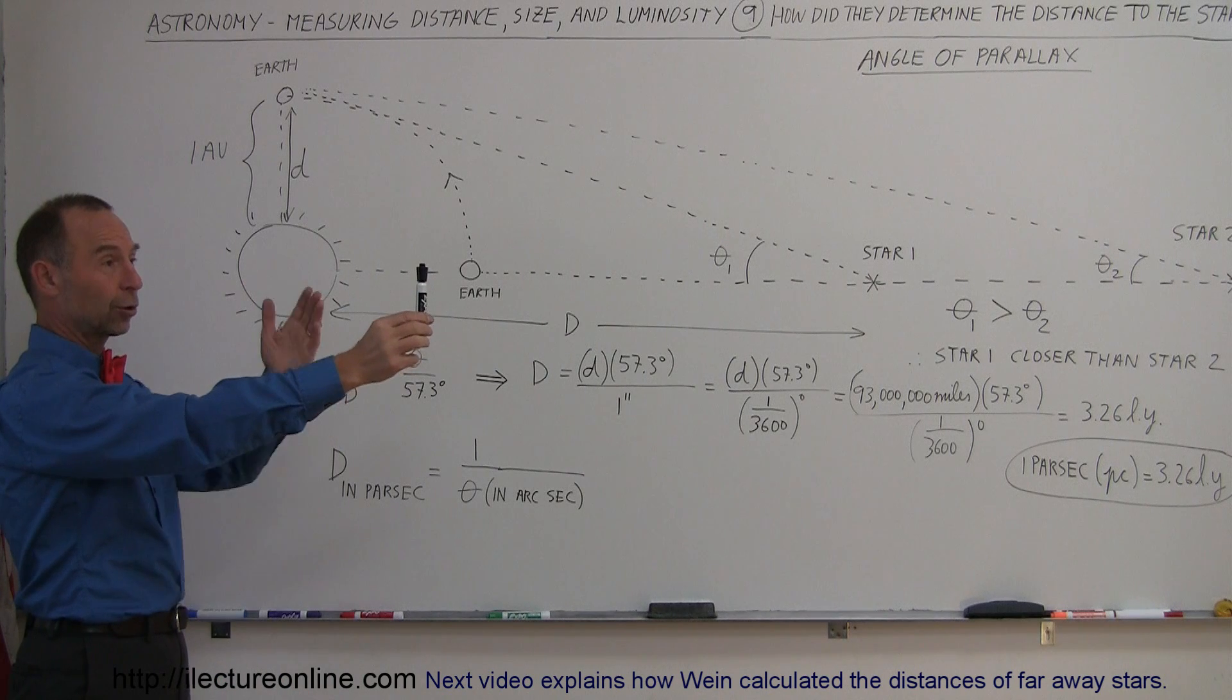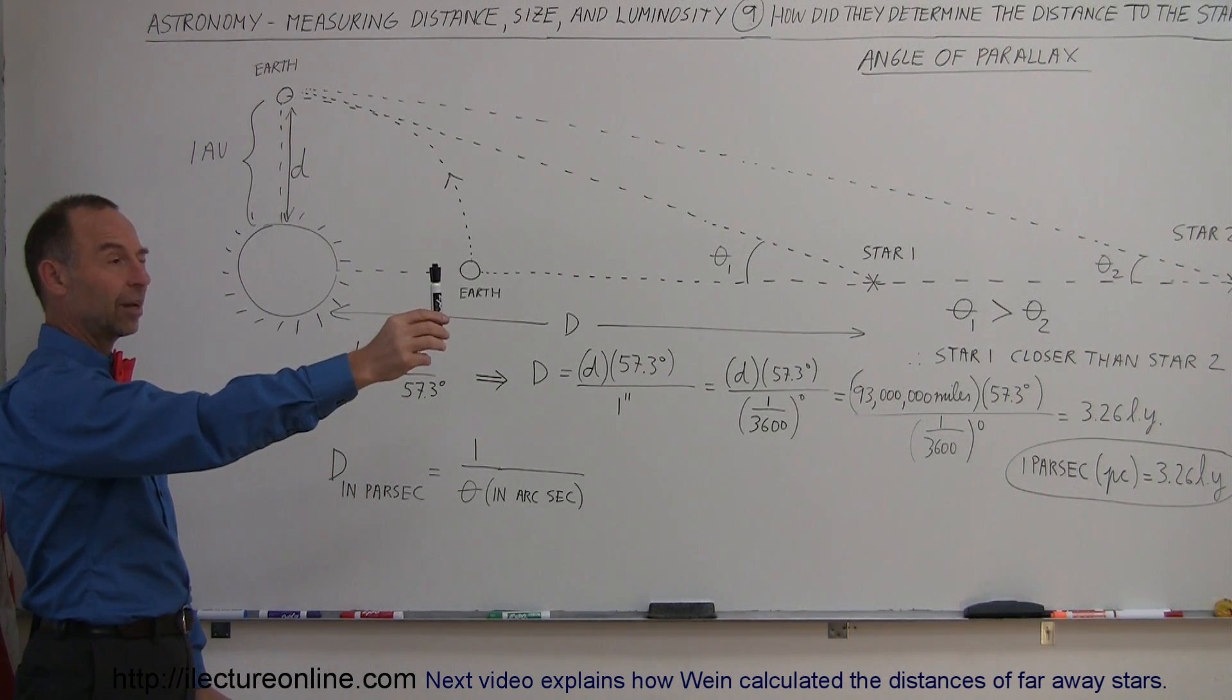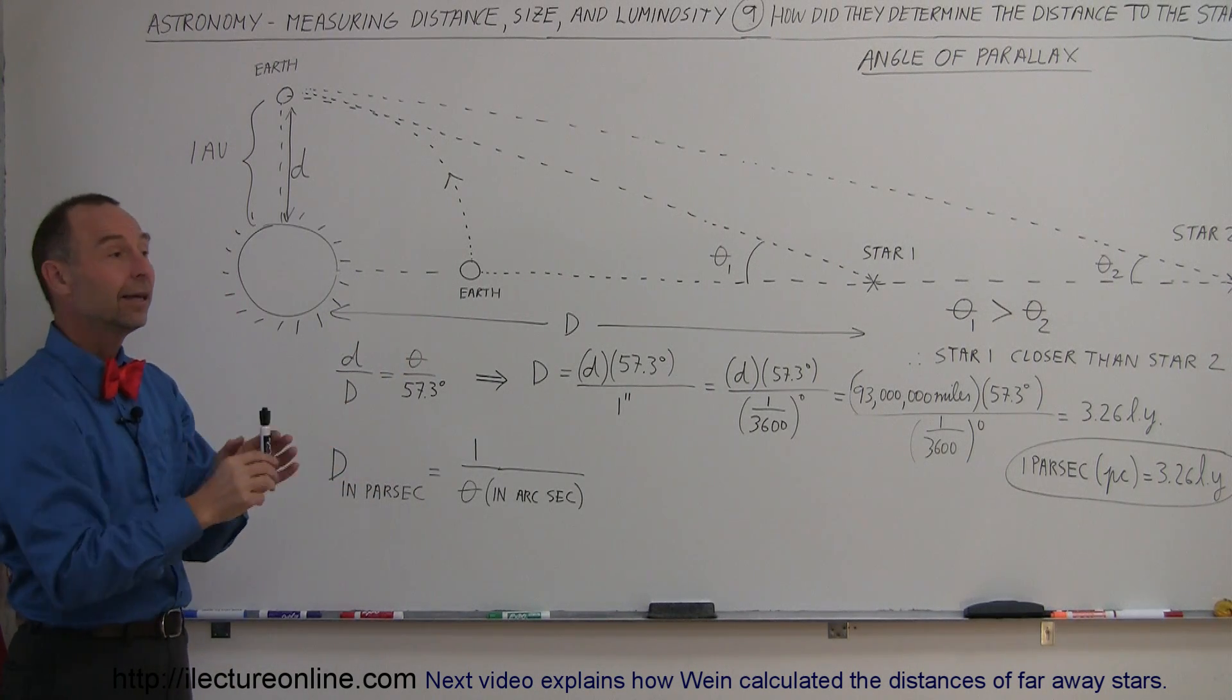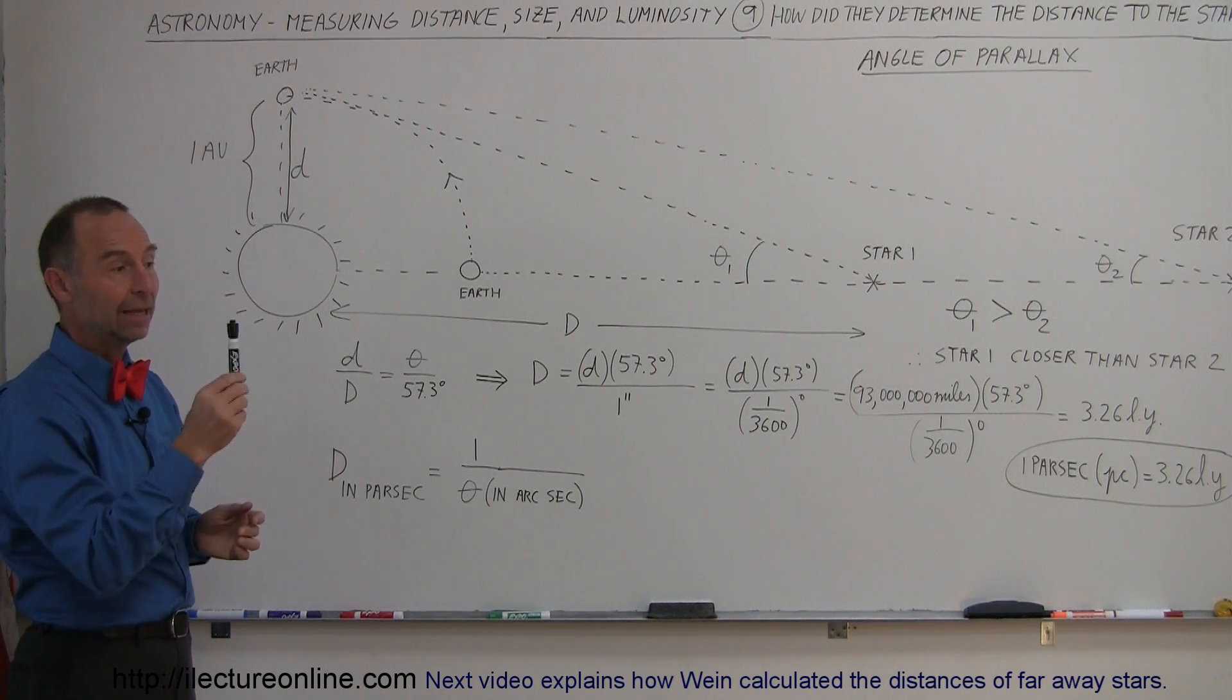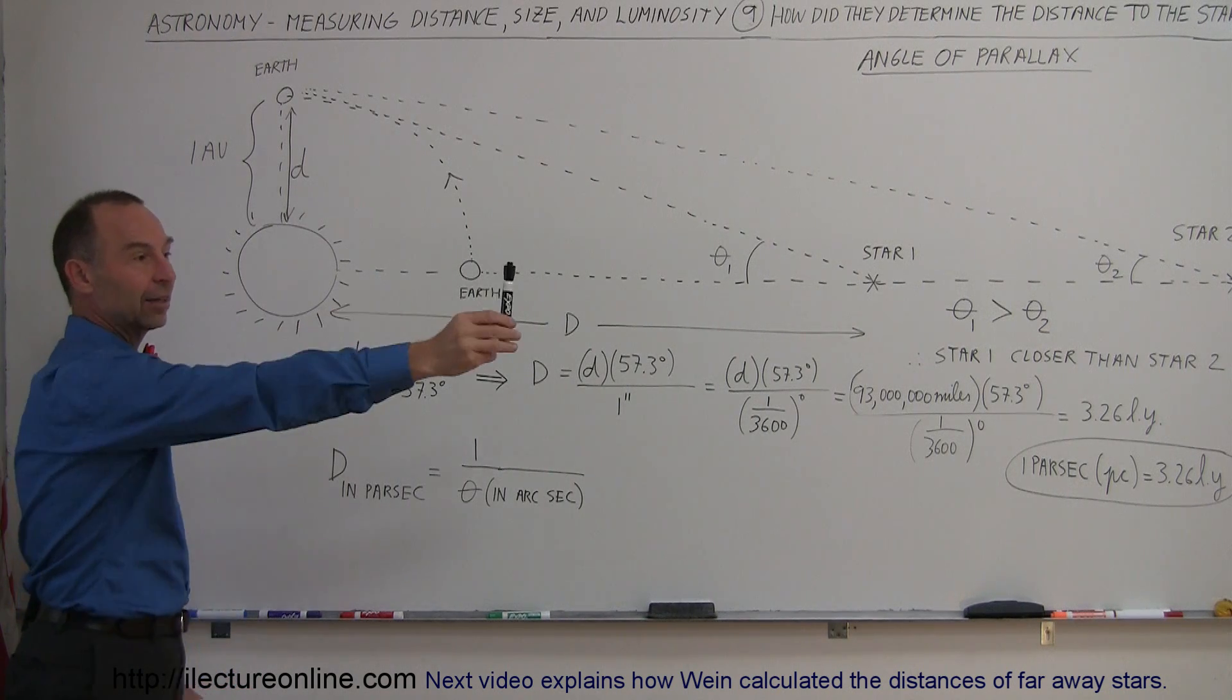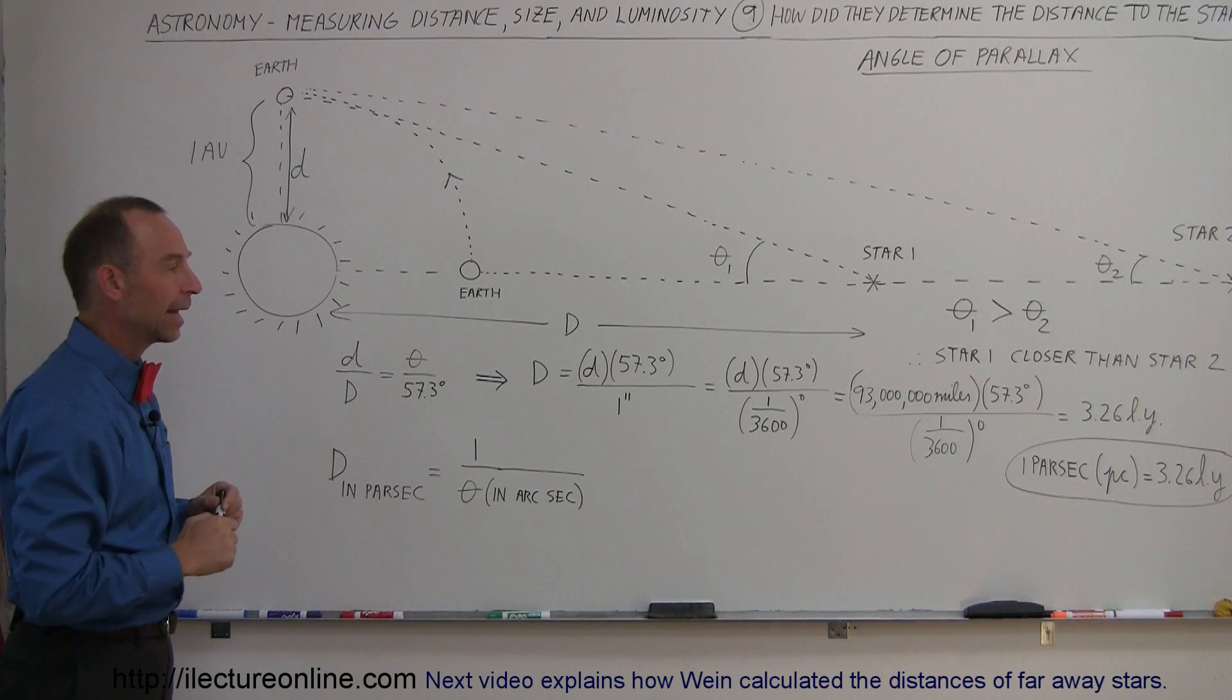So again, put a pen like in front of a corner of a wall or in front of a sofa or a television or something, and look at it with your left eye, and then look at it with your right eye, and all of a sudden, bang, the object switches, and that's what we mean by the angle of parallax. And if you have the object closer by, the angle will be much bigger, and if the object is far away, the angle will be a lot smaller. That's what we mean by the angle of parallax.